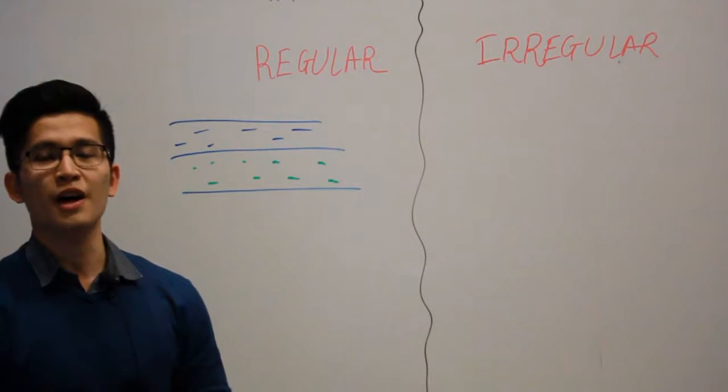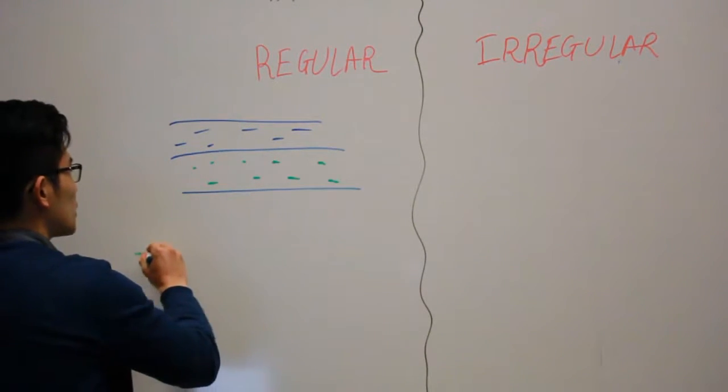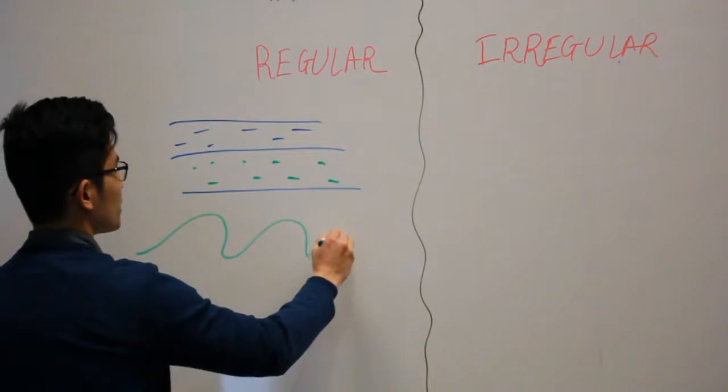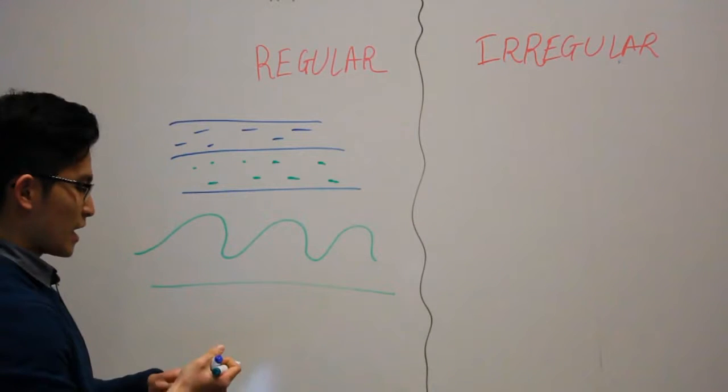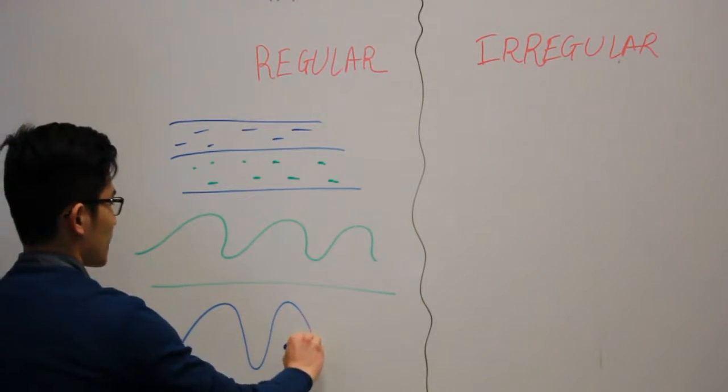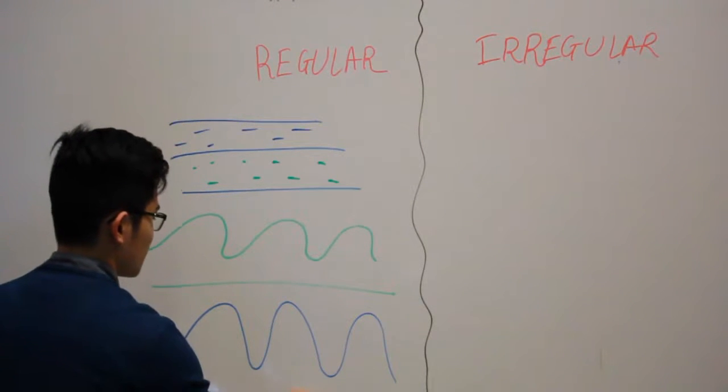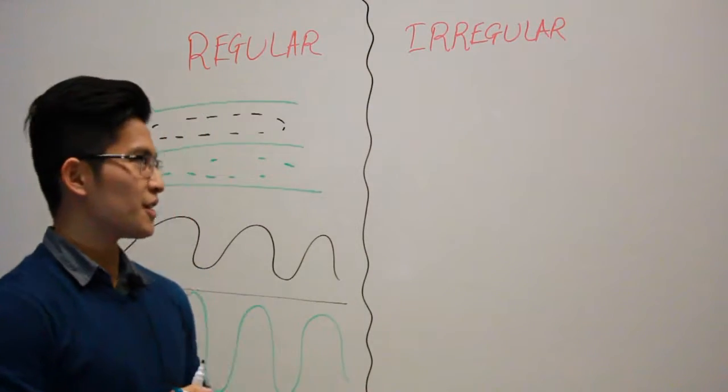And also we have ripples and dunes that we all know the shape and size of them. So that's ripples and the dunes is just like a higher amplitude. These two are ripples and dunes. I think that's enough for the regular stuff.